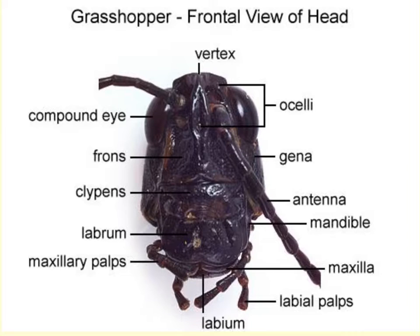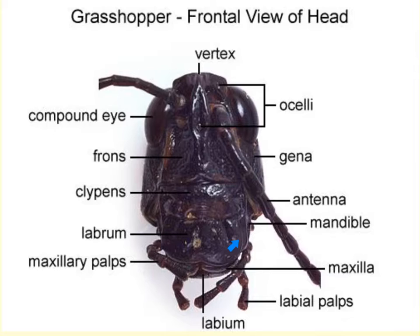The head also has feeding structures — heavy mandibles and the maxillae, which are used for chewing. It has a broad upper lip known as the labrum and a lower lip called the labium, as well as the smaller maxillae. All of these are mouth parts that we do not want to remove during dissection.